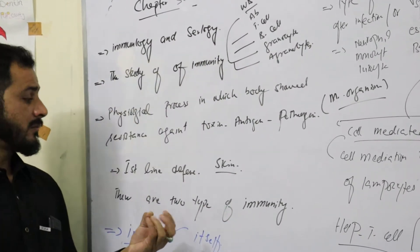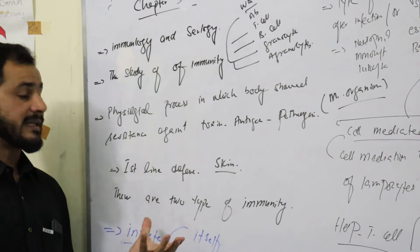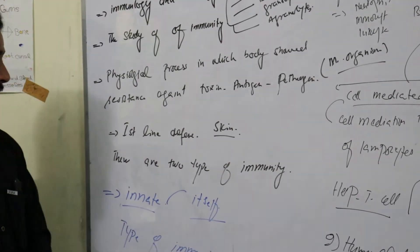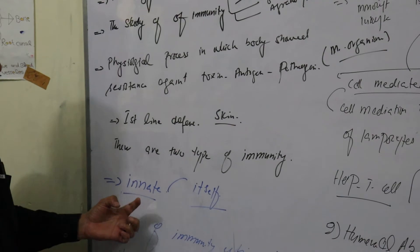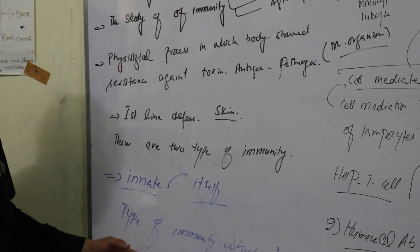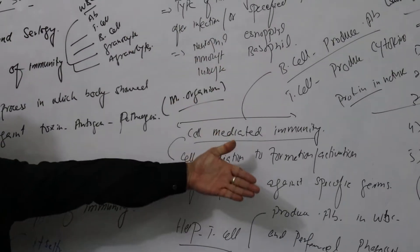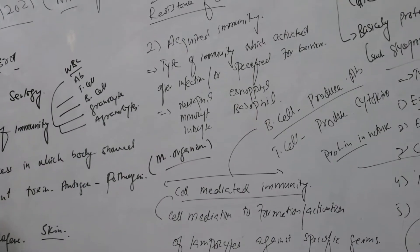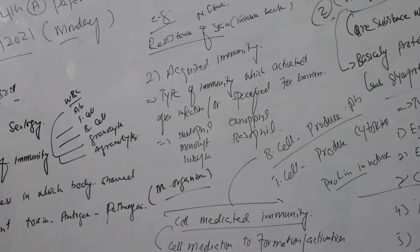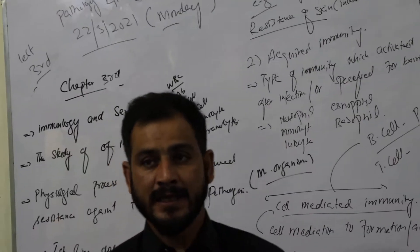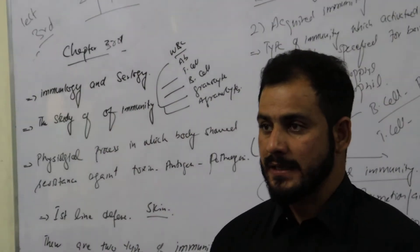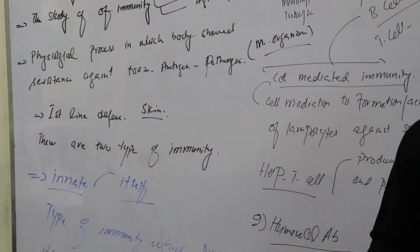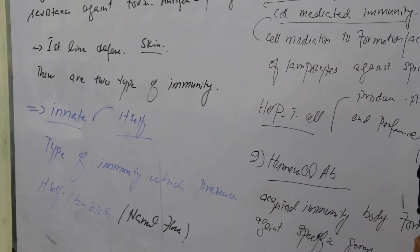The immune system consists of two types. The first one is innate immunity and the second one is acquired immunity. What is meant by innate and what is meant by acquired? This is a very important question.